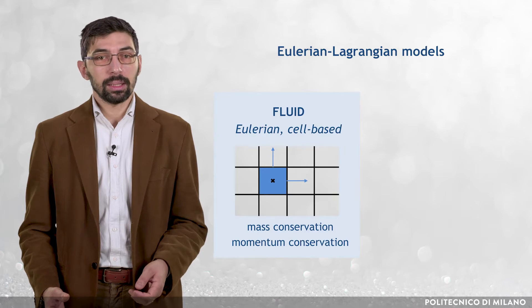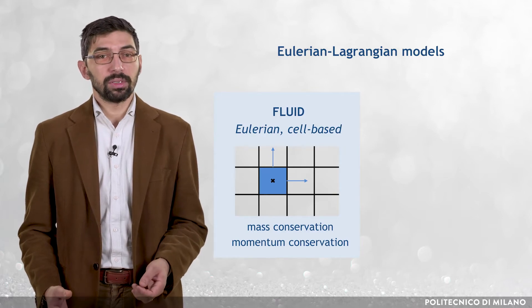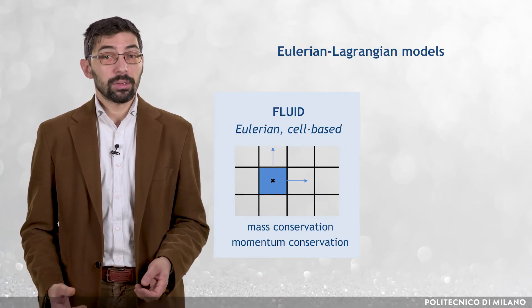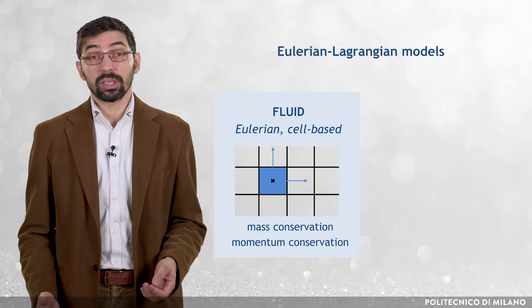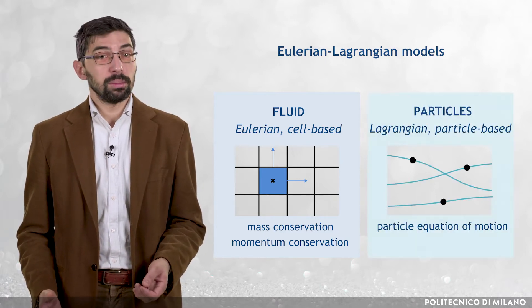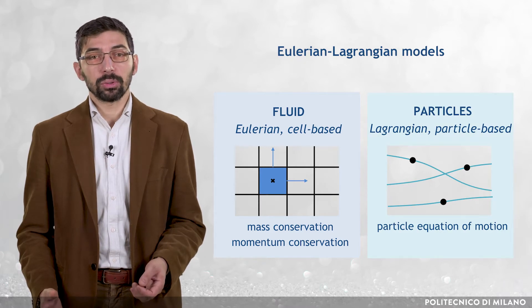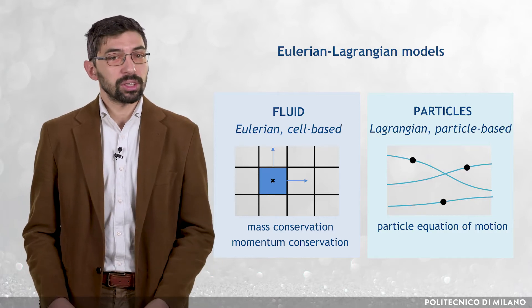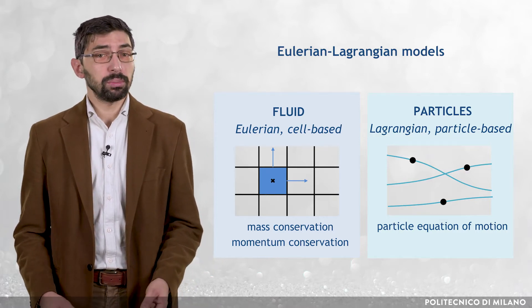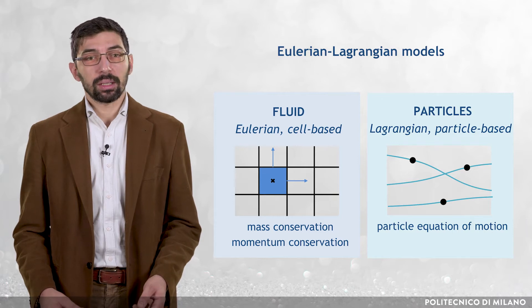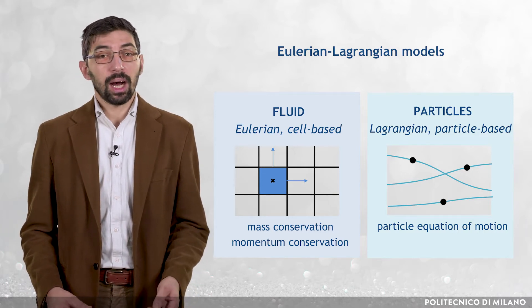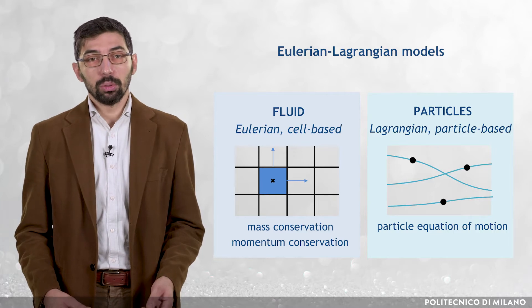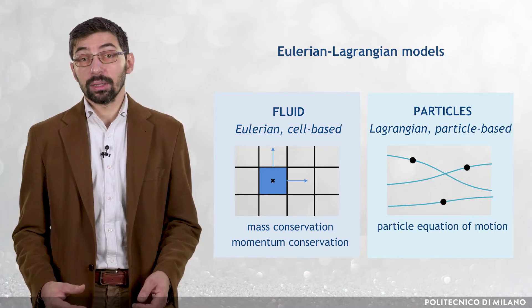With regard to the first step, Eulerian-Lagrangian models rely on the Eulerian, cell-based representation of the flow of the fluid phase through the numerical solution of the mass and momentum conservation equations, whereas the movement of the solid phase is reproduced by solving the Lagrangian equation of motion for a certain number of computational particles. The main drawback of Eulerian-Lagrangian models resides in the high computational burden, which strongly increases with the amount of solids in the flow.